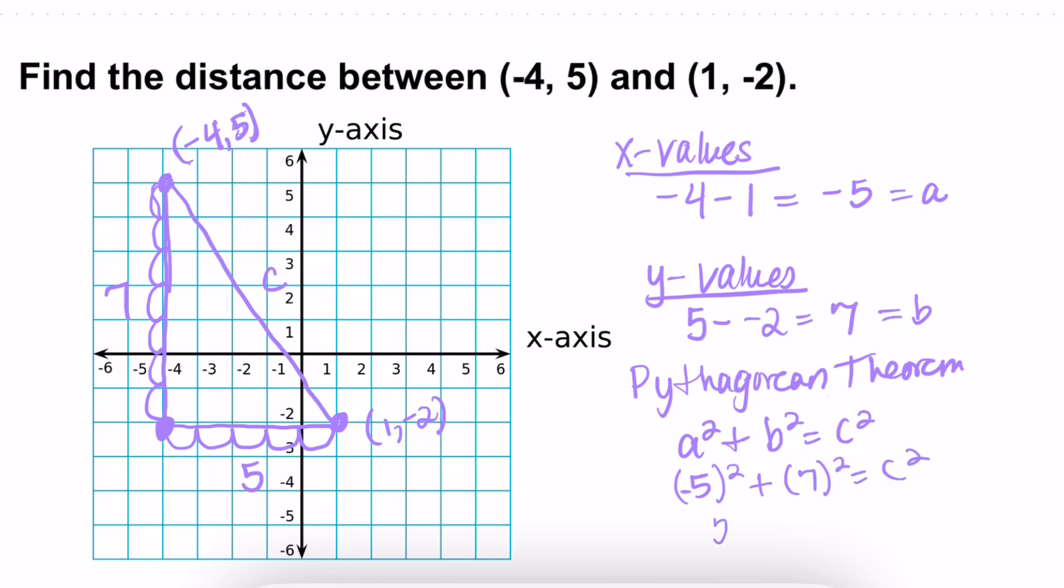That's going to get you 25 plus 49, which is equal to c squared. And so you would have 25 plus 49 equals 74, which is equal to c squared. In order to find the value c, you have to square root both sides. And c, and I'm rounding my number to the nearest tenth, it's going to be 8.6.